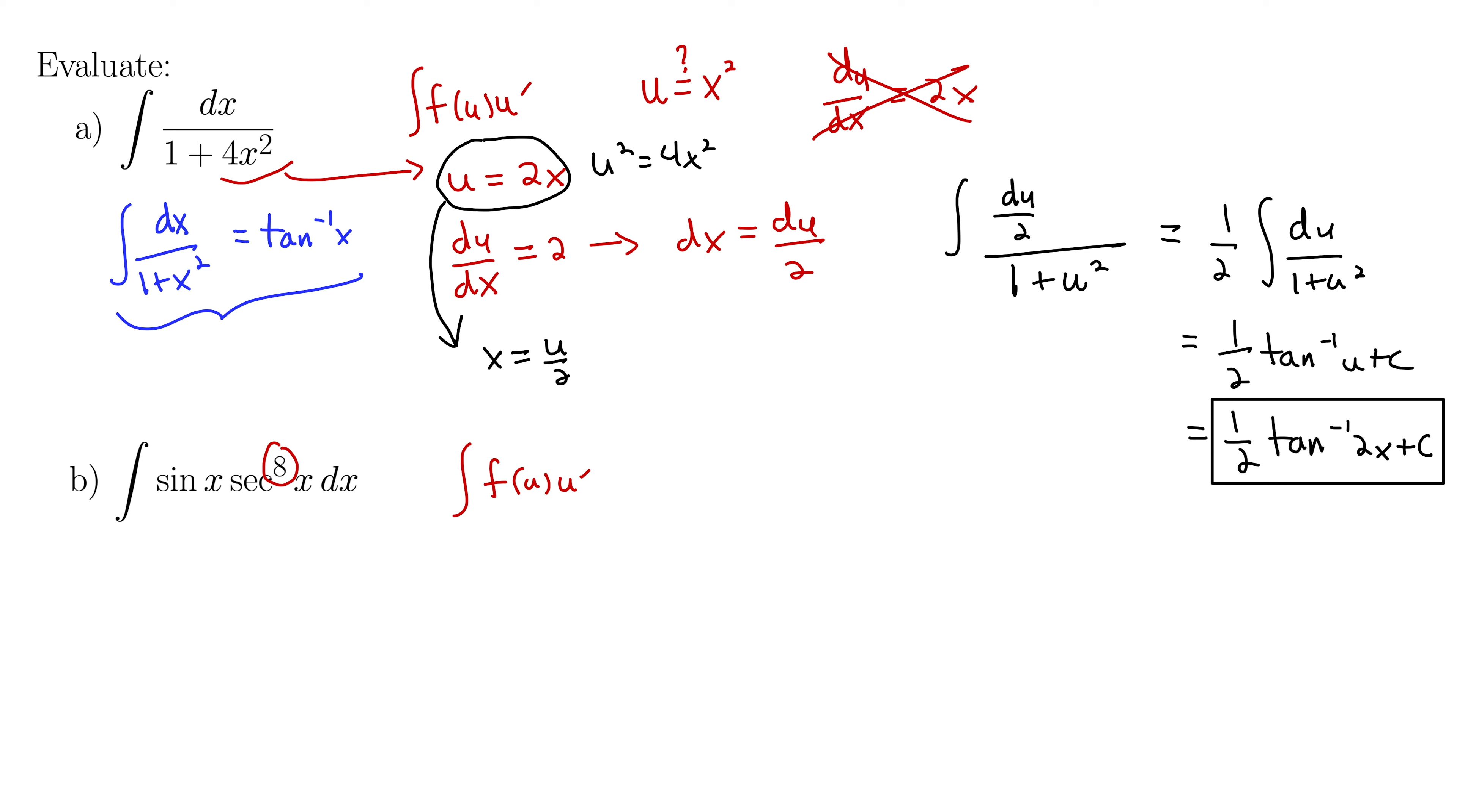Perhaps you recall that secant was actually 1 over cosine of x. So we can rewrite this integral as the integral of sine x all over cos to the 8th of x dx. And now we're in much better shape. So we're looking for a u that's inside a function and a u prime that's outside. And remember, this u prime might be off by a constant.